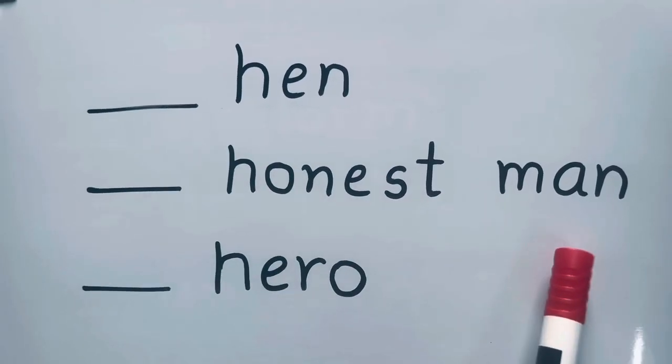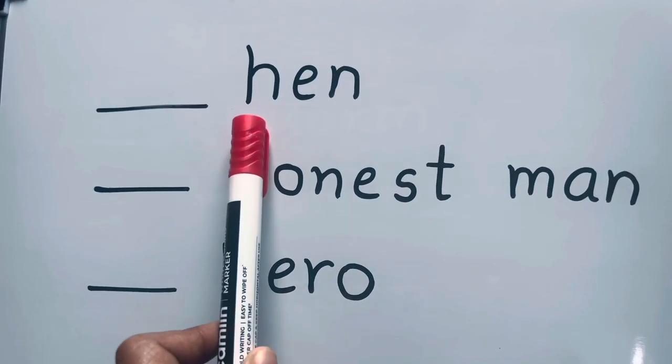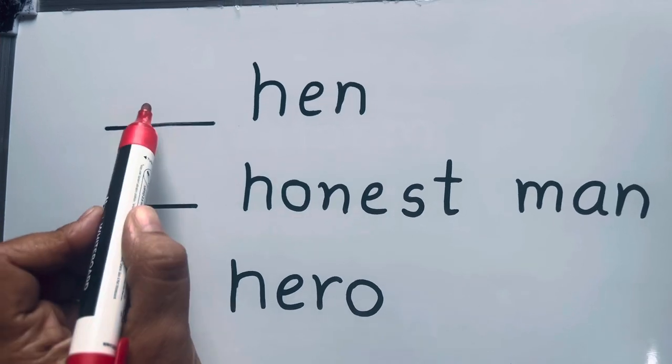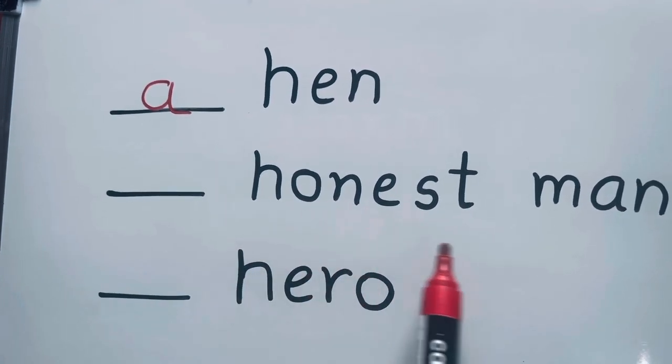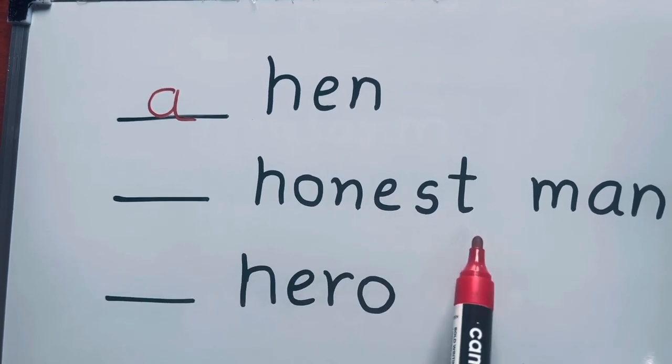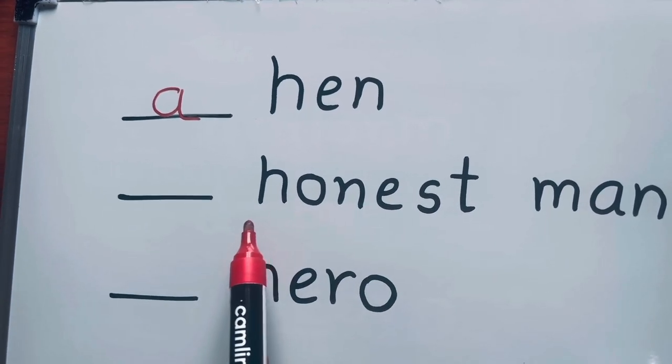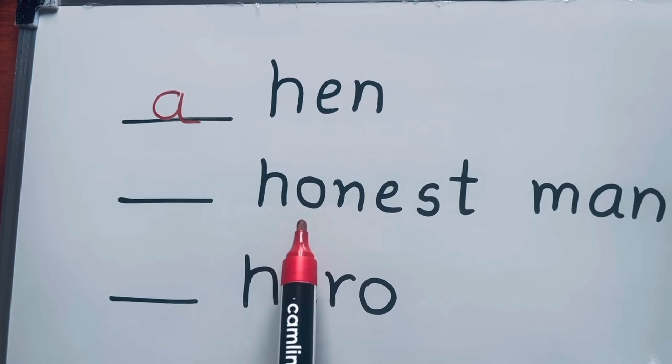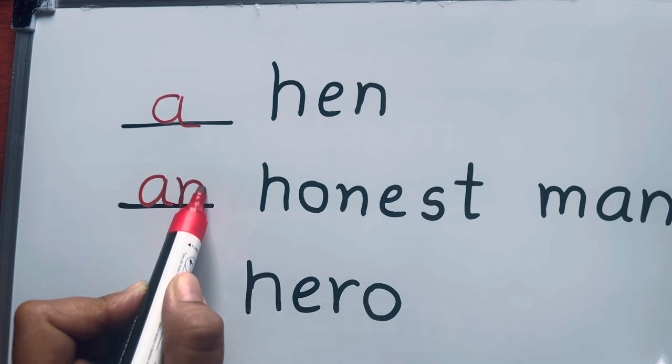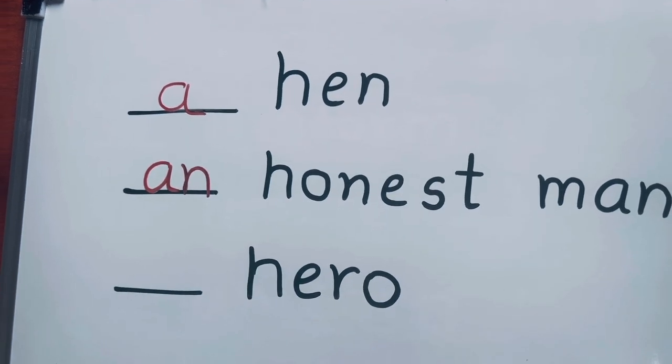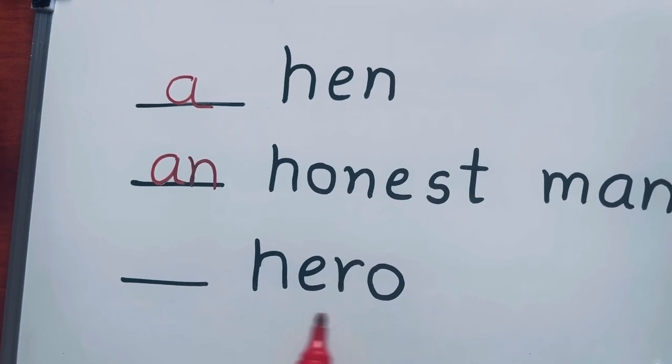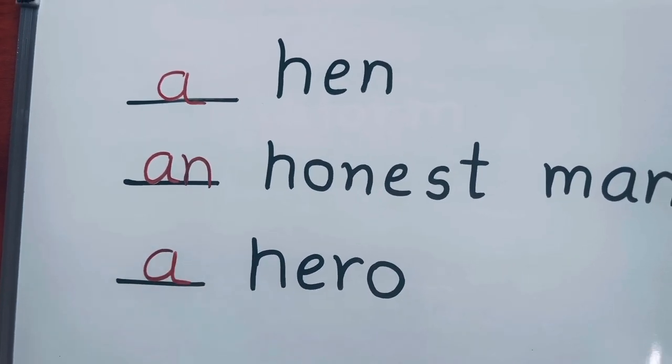Hen, honest man, hero. Hen - H is a consonant sound, so a hen. Honest - H is silent here and it's going to start with a vowel sound, so an honest man. Hero - H is a consonant sound, so a hero.